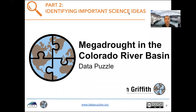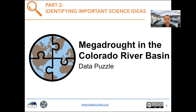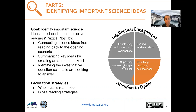In this video I'm going to describe the 'identifying important science ideas' practice in the context of the mega drought in the Colorado River basin data puzzle. The goal of this practice is to help students identify important science ideas introduced in an interactive reading called the puzzle plot.